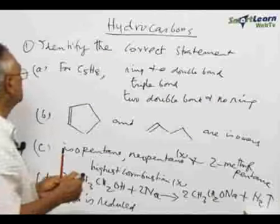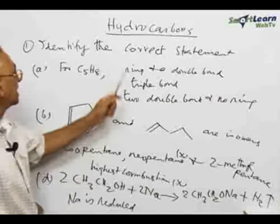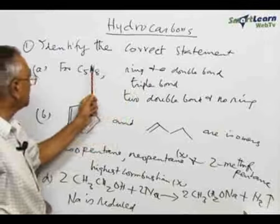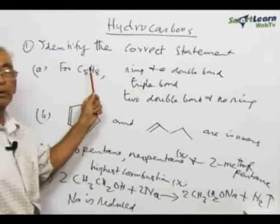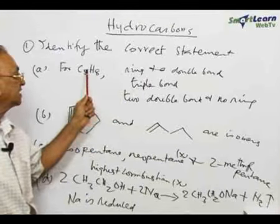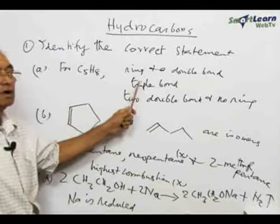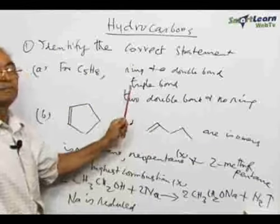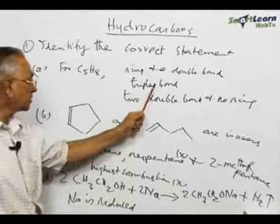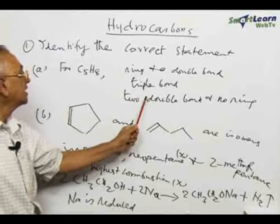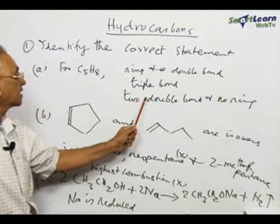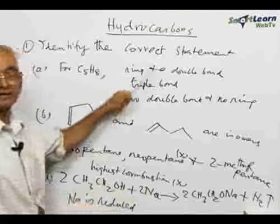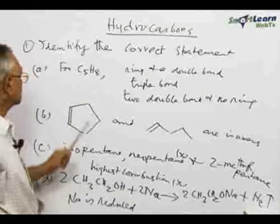The three options available for the first statement — for C₅H₈ — are: a ring and a double bond, a triple bond, or a compound with two double bonds and no ring structure.